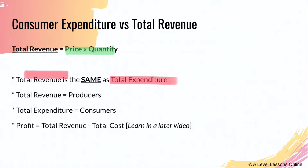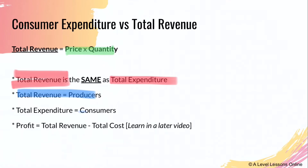Why is producer revenue the same as consumer expenditure? Assuming ceteris paribus — everything remaining constant — when a consumer purchases a good for, say, five dollars, that five dollars goes directly to the producer. As a result, this is the revenue the producer gains. So total revenue is for producers, and total expenditure or consumer expenditure is looking at consumers.